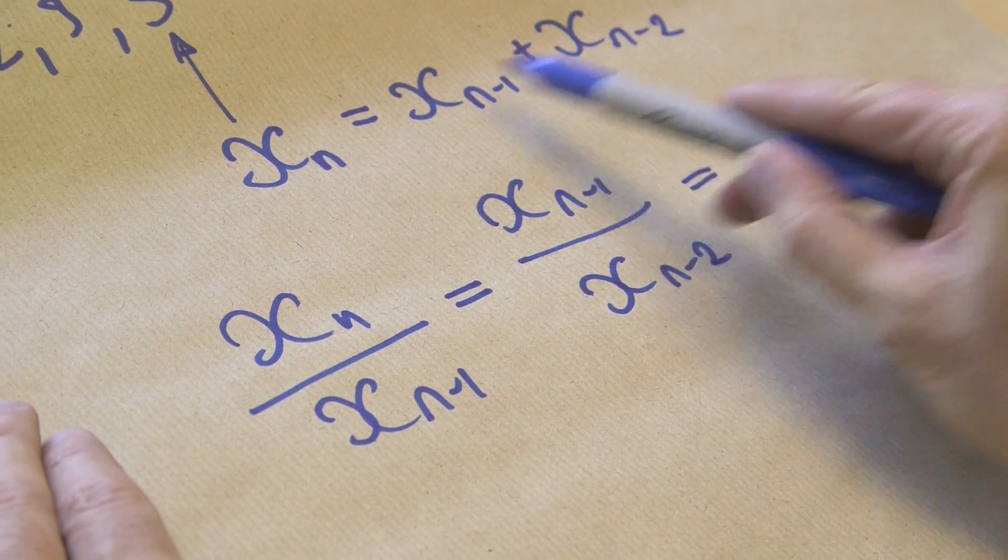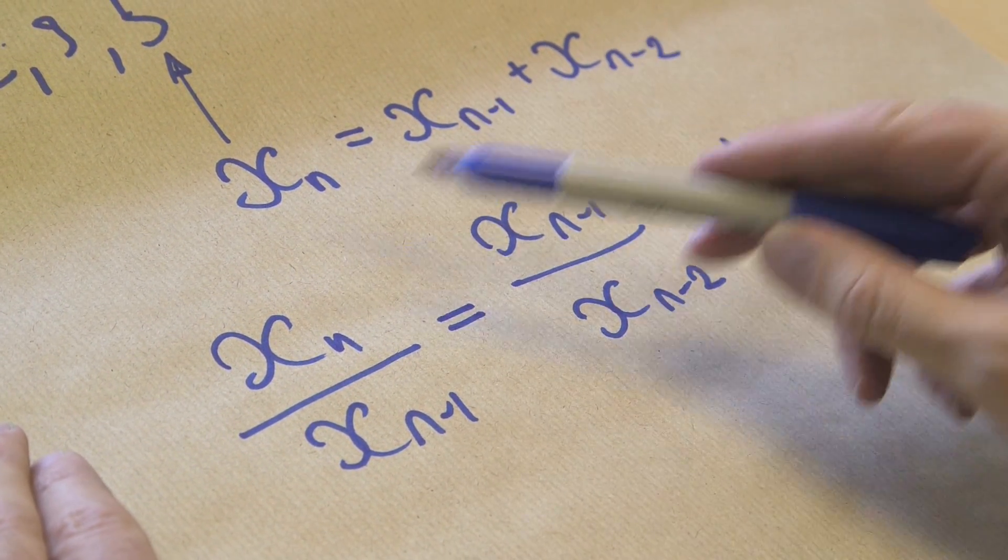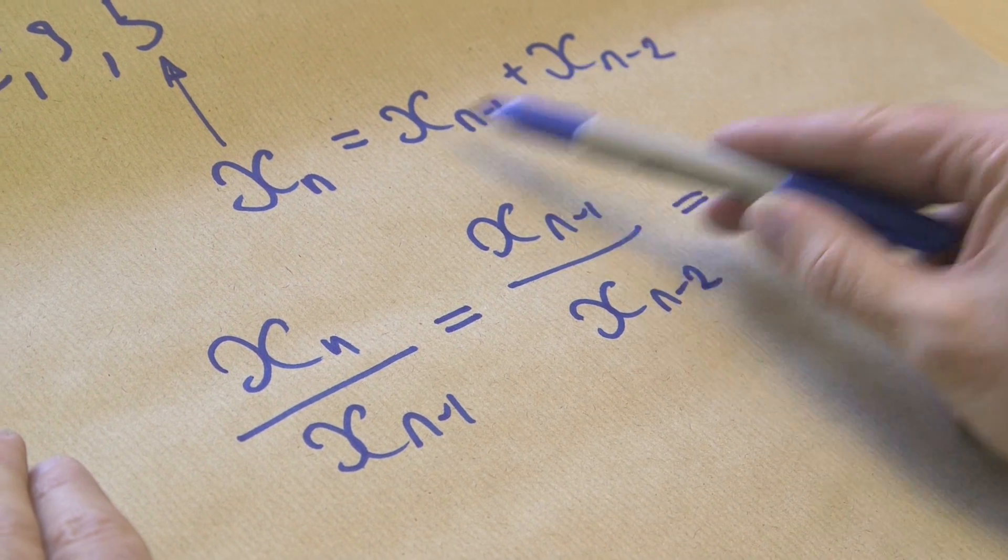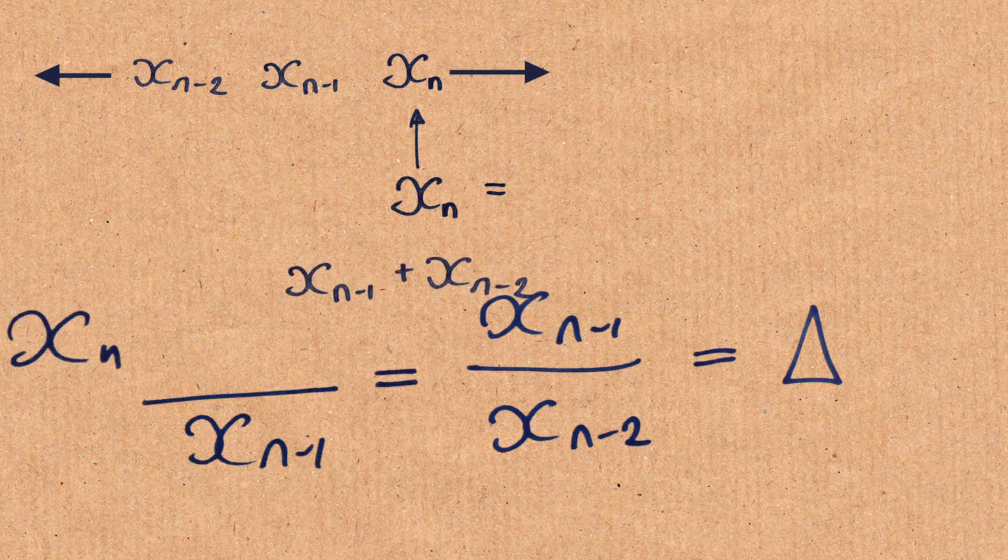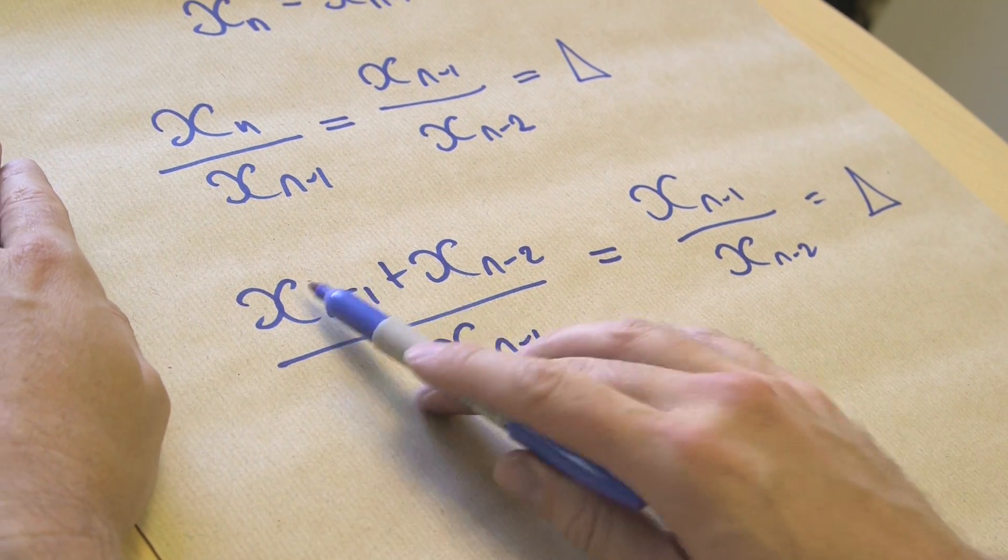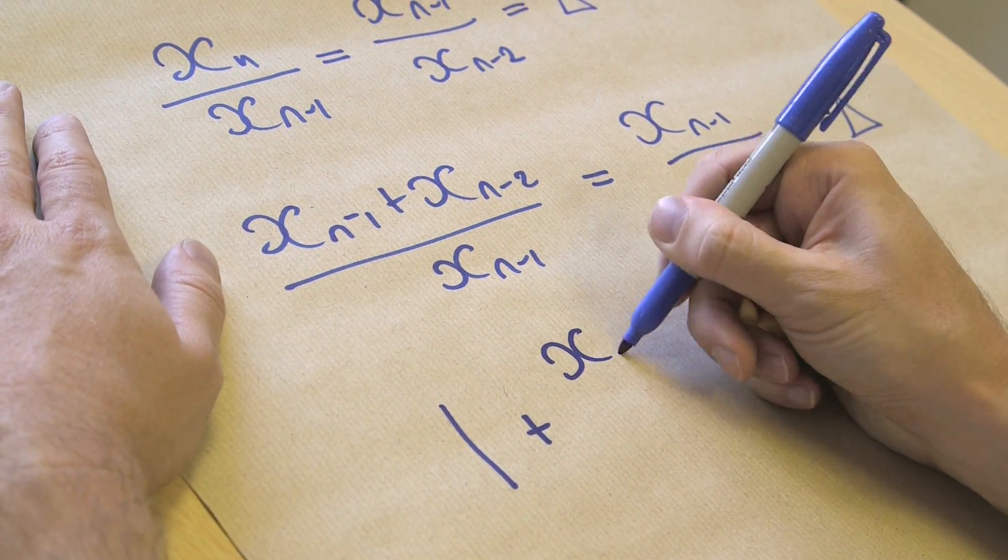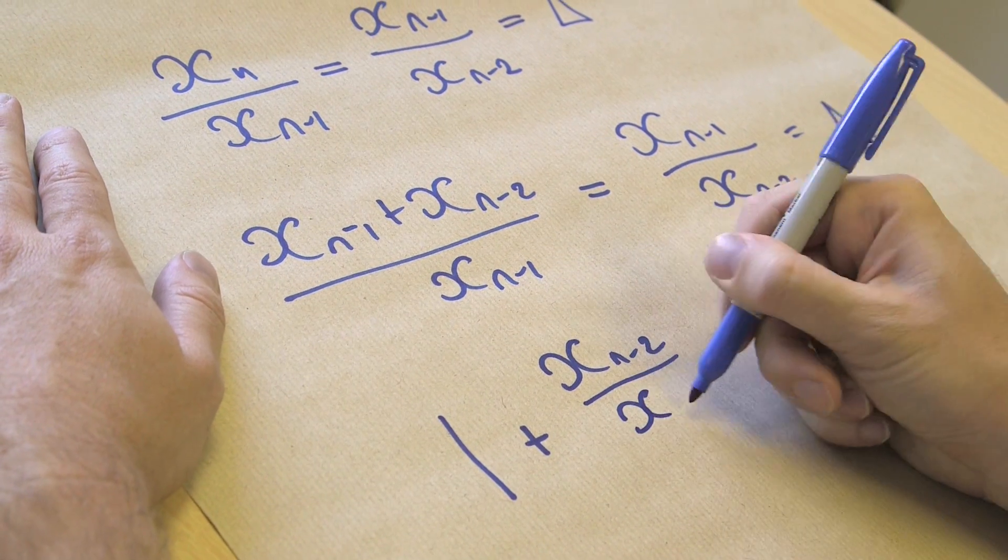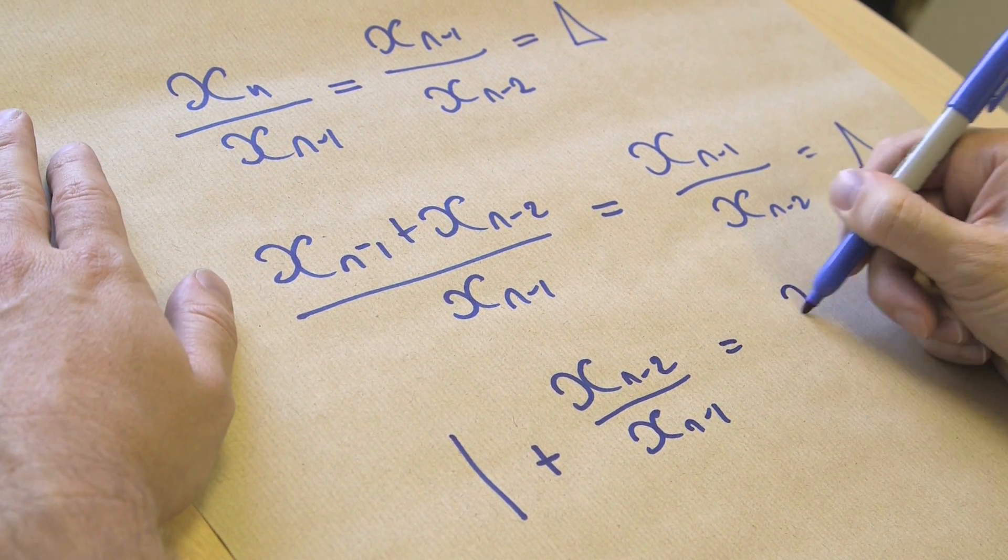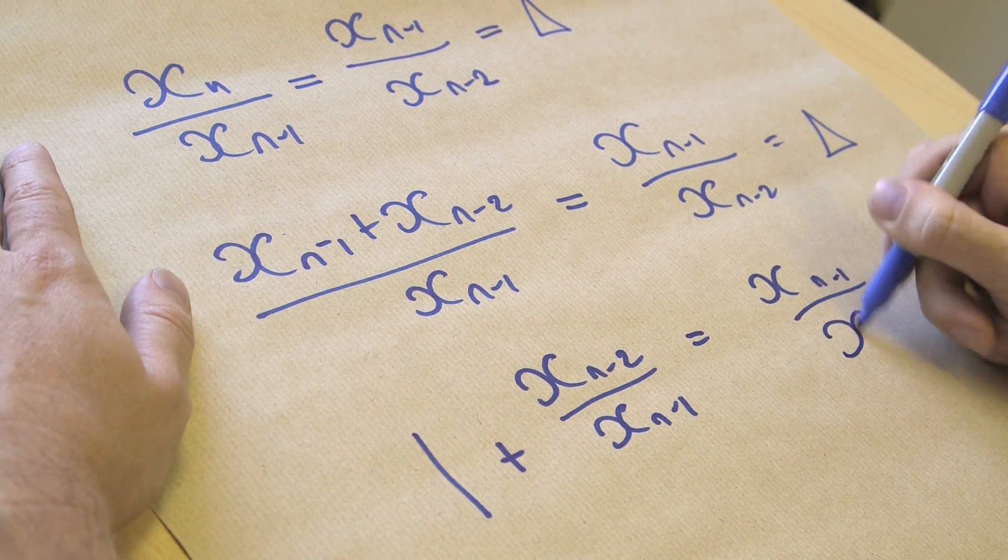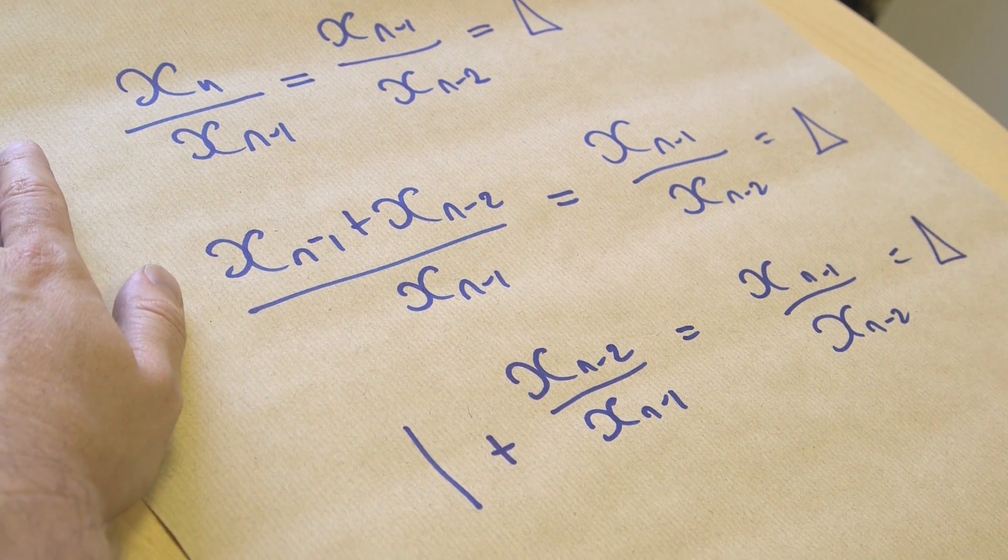Now we know, according to our relationship which generates this sequence, that xn equals the two before it added together. So I'm going to put that in instead of x, so all I've done is substitute that in. But now I can start simplifying because I've got the same term there twice. So in fact, if I divide through, that's one plus xn minus 2 over xn minus 1, which still equals xn minus 1 over xn minus 2, which still equals the ratio delta we're looking for.